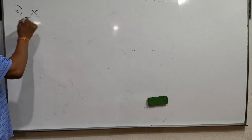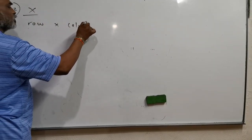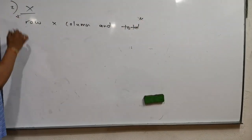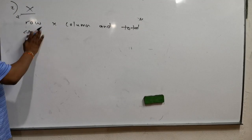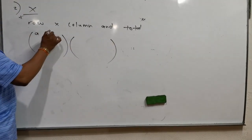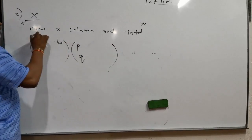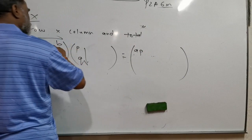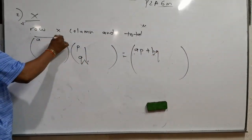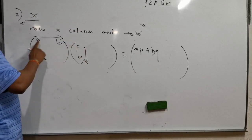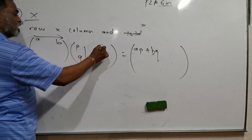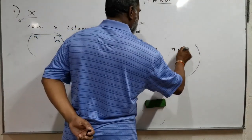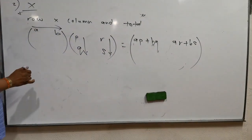The second aspect is multiplication. Always remember: row times column, and the order matters. Whenever you multiply, for example [a, b] times [p; q]: you do row times column, so it is a×p + b×q. Draw the arrow to remember how to multiply.